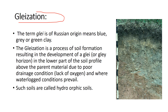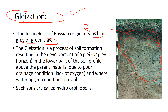The next process is gleization. 'Gley' in Russian means blue-green or green clay. Gleization is a method of soil formation resulting in the formation of clay in the lower part of the soil profile above the parent material, due to poor drainage conditions — lack of oxygen and waterlogged conditions. This results in the formation of gley, compounds that are blue or green in color, which impart that color to the soil.